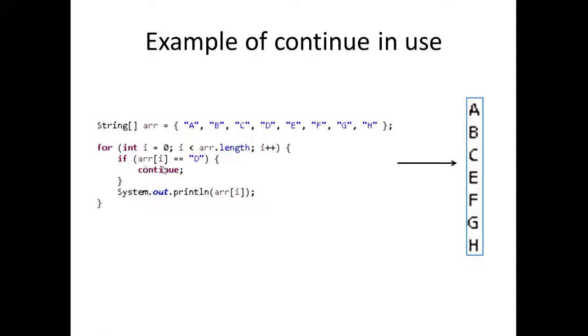So once it's making its way through this loop, if the array at position three, which is D right here, if the array at position three equals D, we're going to immediately jump to the next iteration of this loop and not even execute this part of the loop, the system.out.println. That's pretty much what the continue keyword is all about.